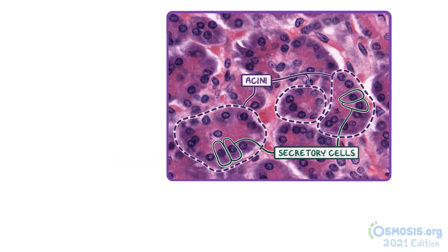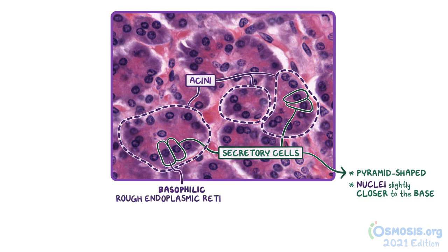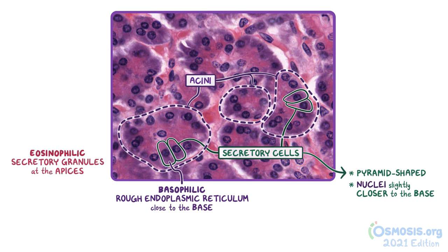We can see that the secretory cells are pyramid-shaped, and their nuclei are found slightly closer to their bases. This slide was stained with H&E, which allows us to see the purple basophilic rough endoplasmic reticulum seen closer to the base of each secretory cell, and the pink eosinophilic secretory granules at the apices are inactivated enzymes called zymogens.